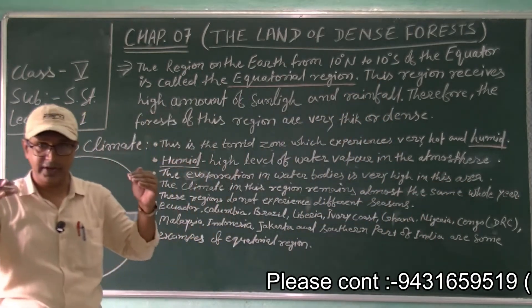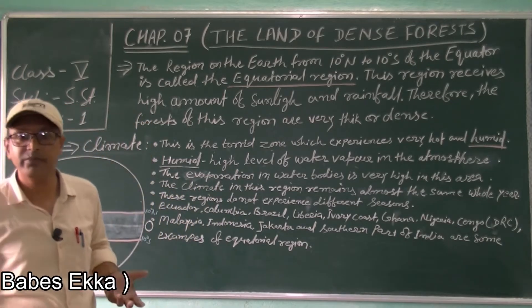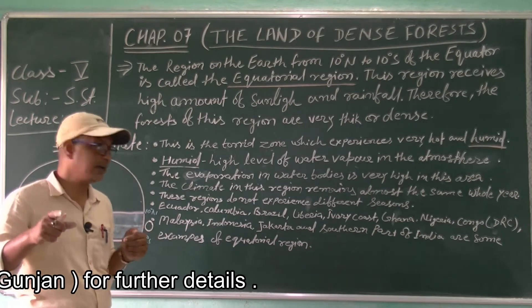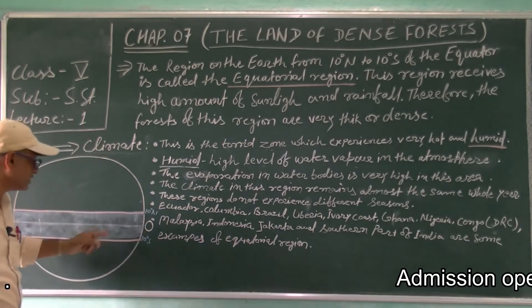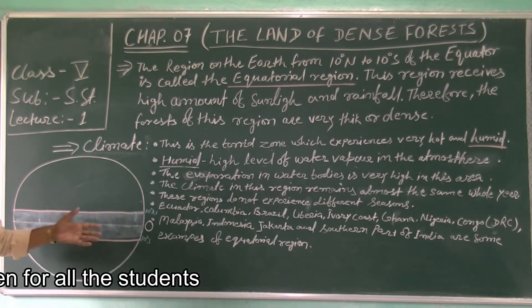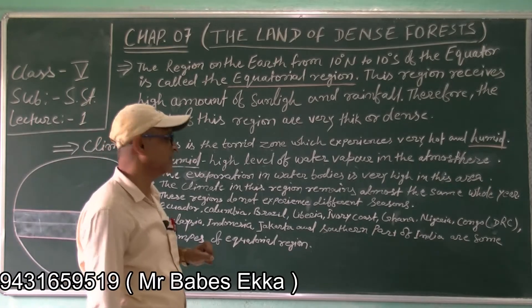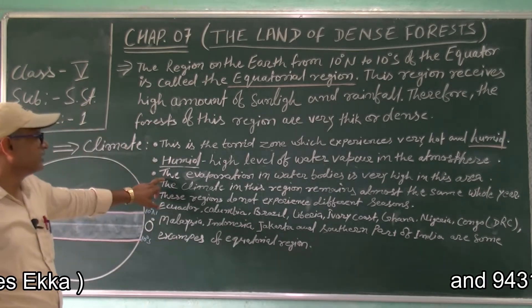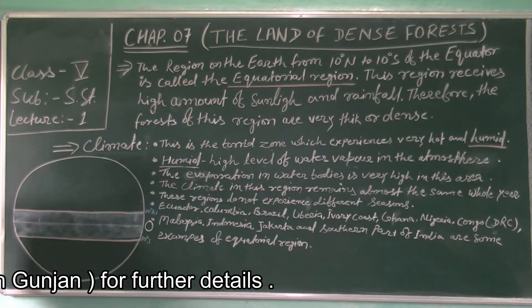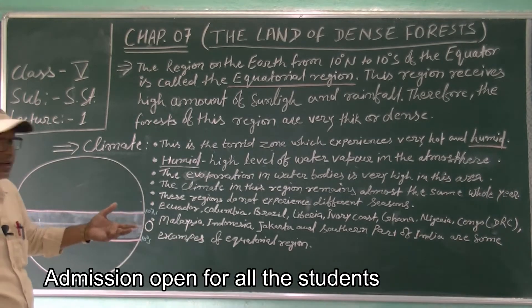Here in this classroom we may not have much water vapor, but in the equatorial region there is a lot of water vapor. Rainfall is more and more, so water vapor is present in the environment or atmosphere. Next, there is evaporation from water bodies. In this area there are water bodies — there are rivers like Amazon, Congo, and Nile.